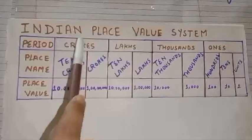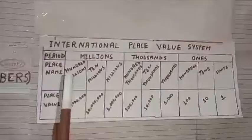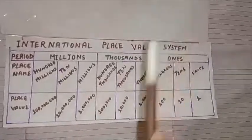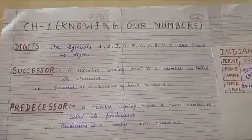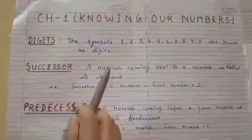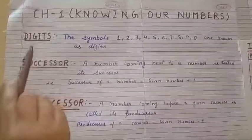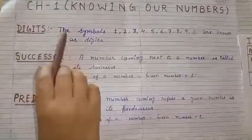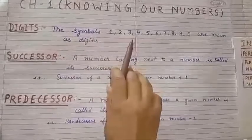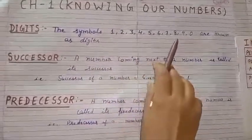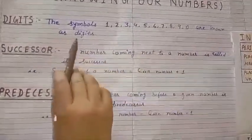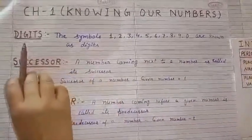In this chapter we are going to study about successor, predecessor, Indian place value system, and international place value system. Students, do you know about numbers? How can numbers be formed? Numbers are formed using digits. The symbols 1, 2, 3, 4, 5, 6, 7, 8, 9, and 0 are known as digits.